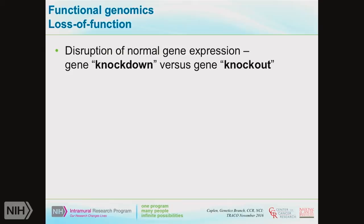There are two broad approaches to loss of function: you can do a knockdown, which has been the focus of my work for the last 10 years, or you can do a knockout. These can give slightly different answers depending on threshold effects of how much protein you need, and each has pros and cons. Knockdowns have the advantage of being reversible — you can knock it down and allow it to come back. Knockouts are irreversible in many contexts, and if your gene is completely essential, that makes it very hard to study certain aspects of its biology.